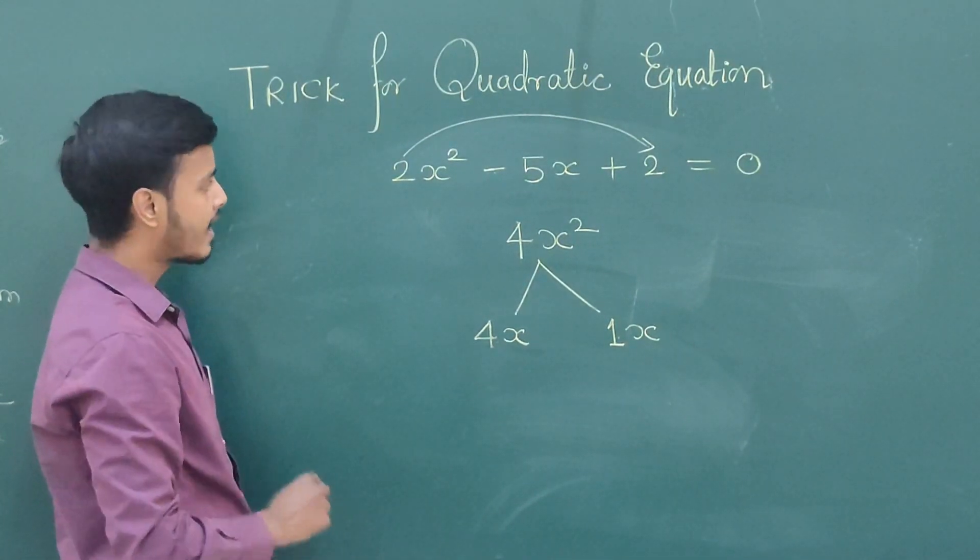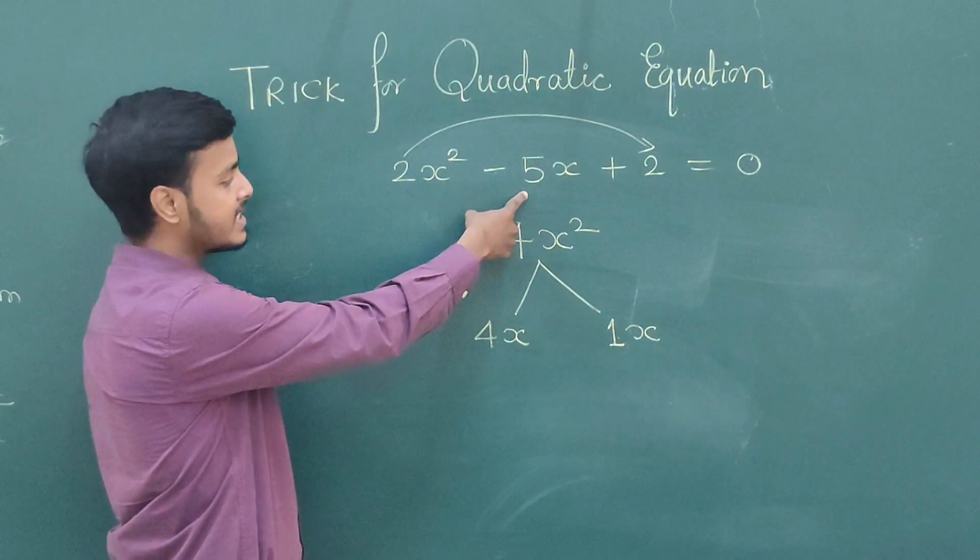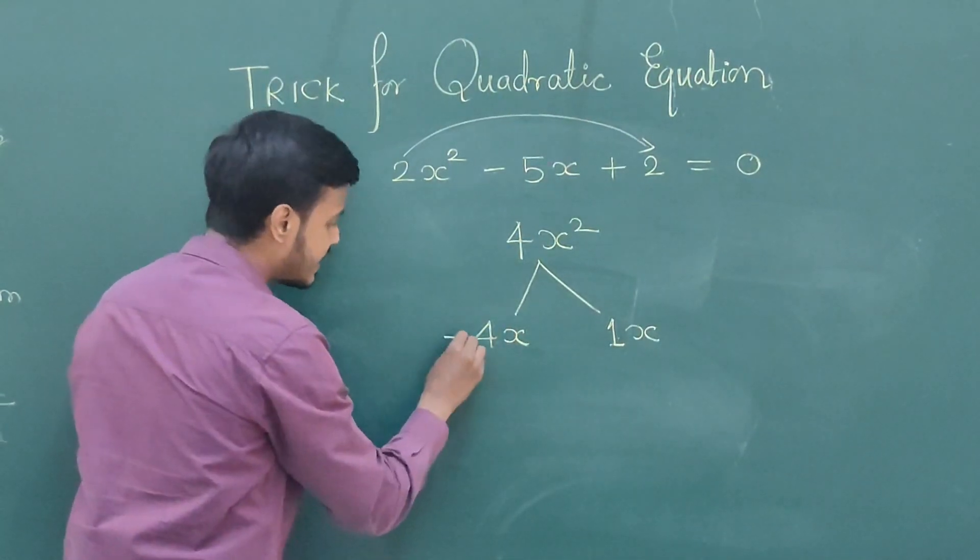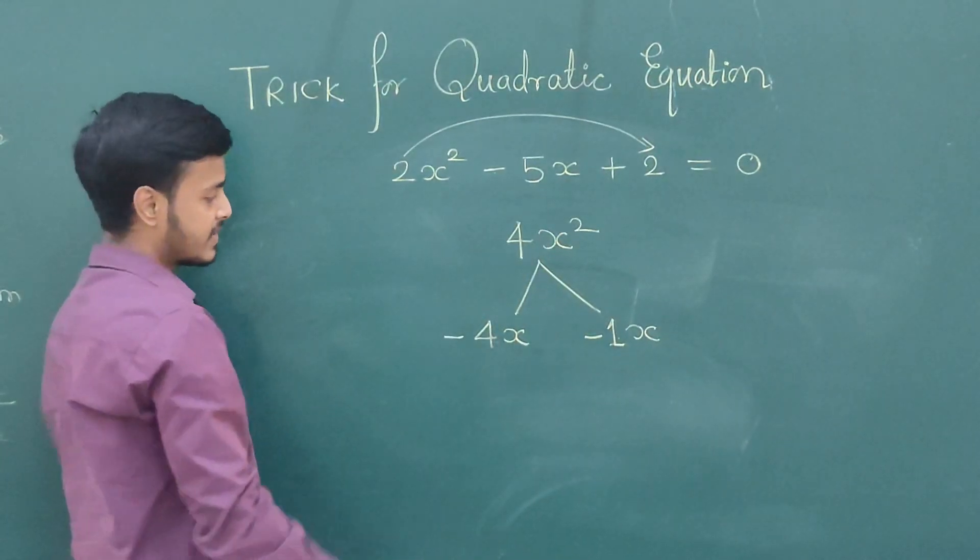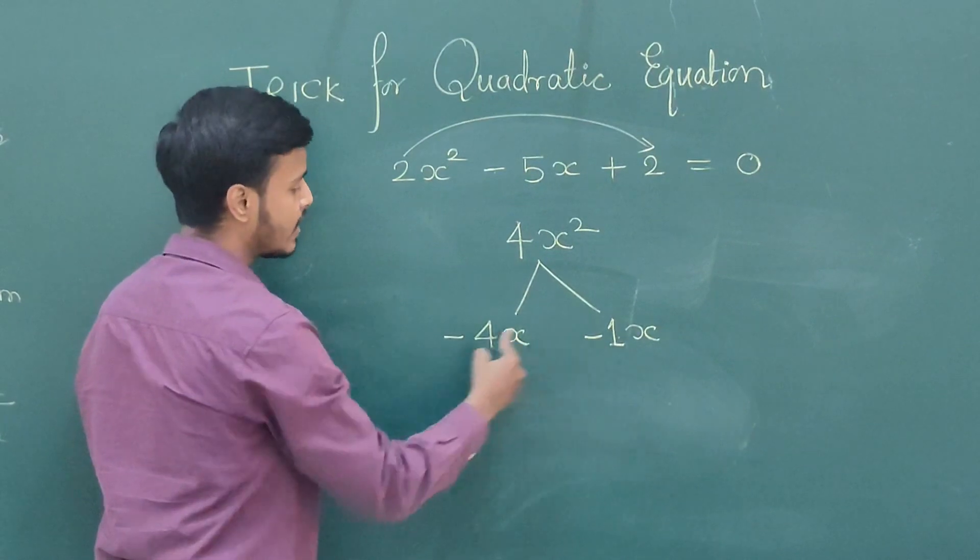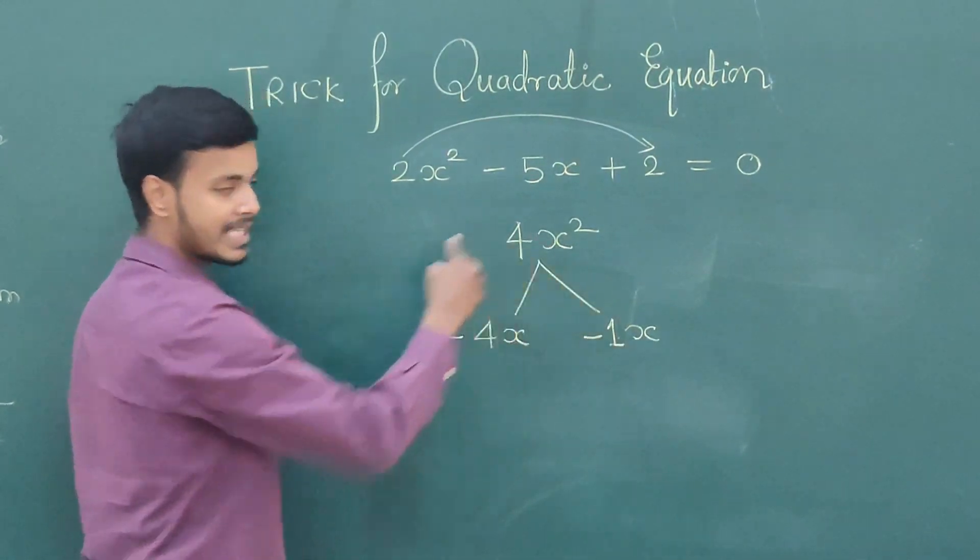Factors of x squared is x into x. Now I need it to be minus 5. So 4 plus 1 is 5, so I need to take minus, minus. So now minus 4x minus 1x is minus 5x. Minus into minus is plus 4, x into x is x squared.